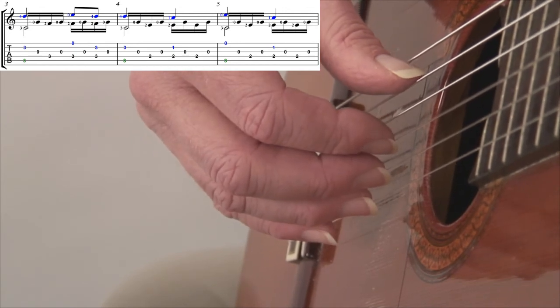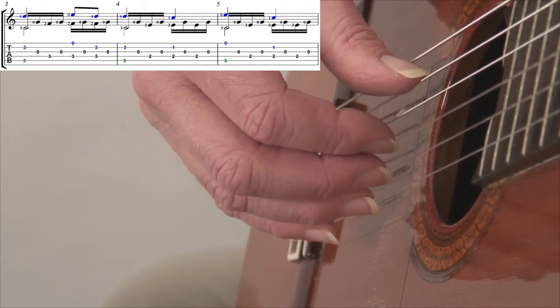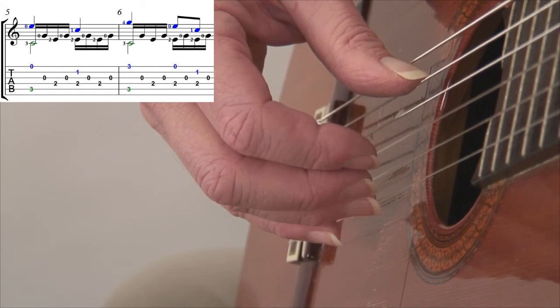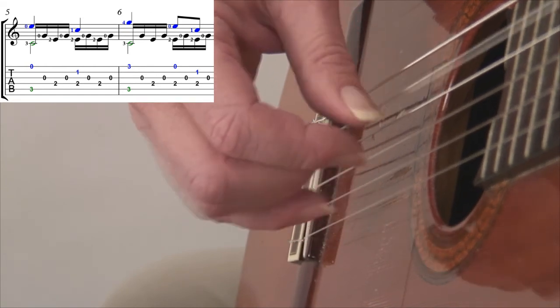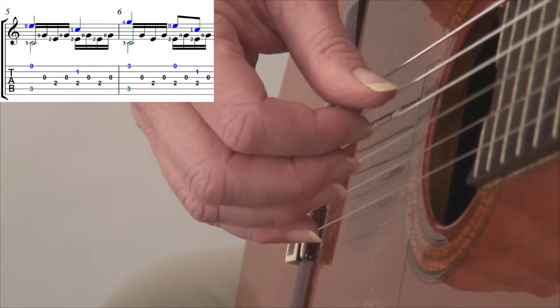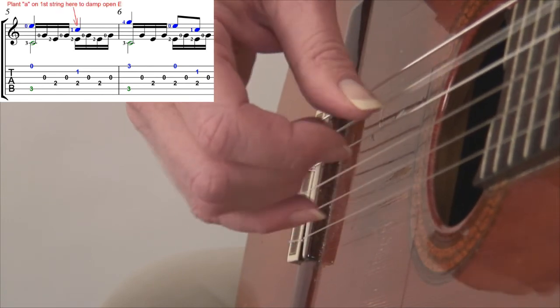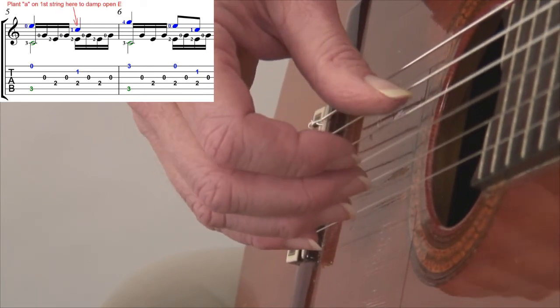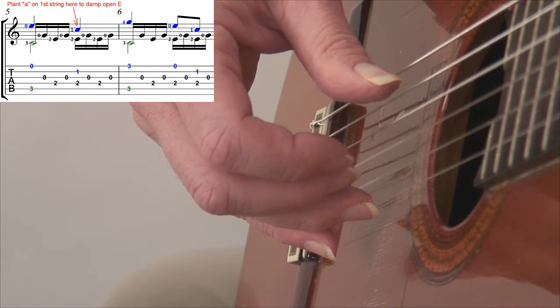And that similar technique can be used anywhere where you don't want to do a left hand damp. For instance, in measure five, same as measure one, instead of damping with the left hand, I can plant the A finger on the first string to damp the first, the open E.